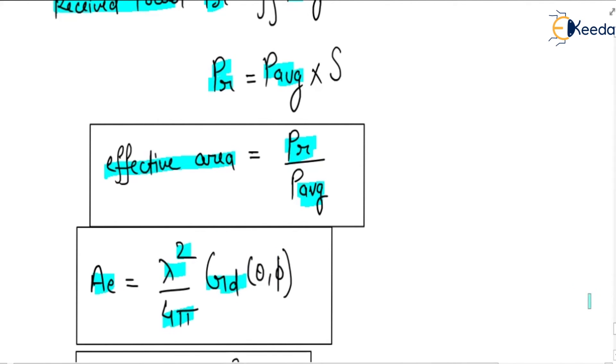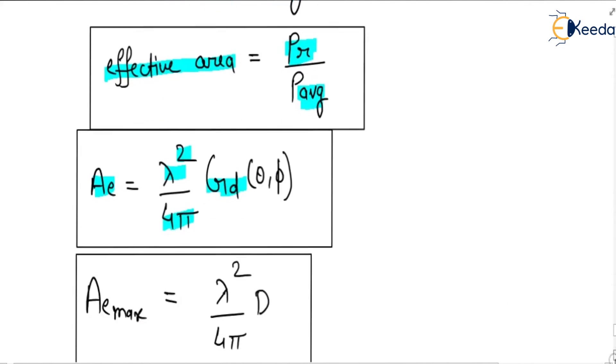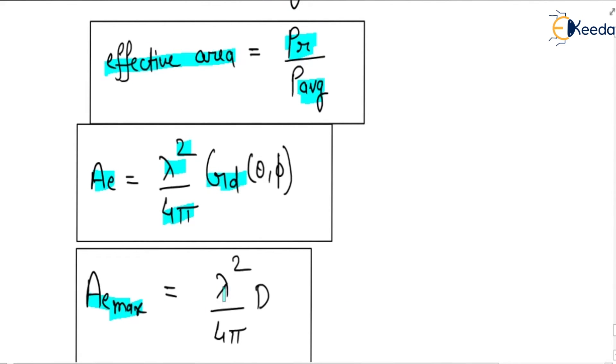The maximum effective area Amax = λ²/(4π) × D, because GD max equals directivity D.